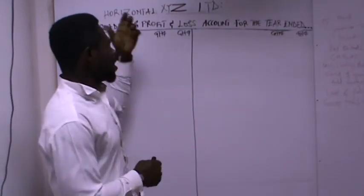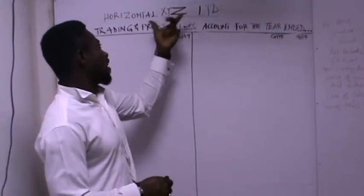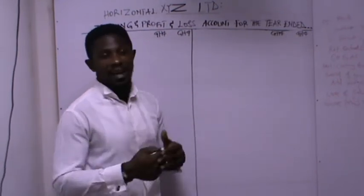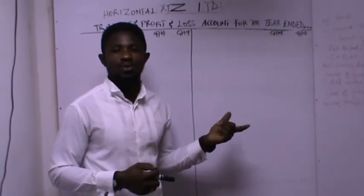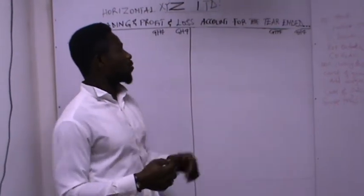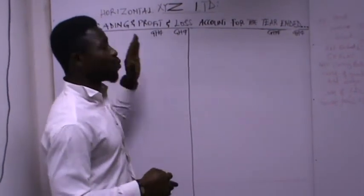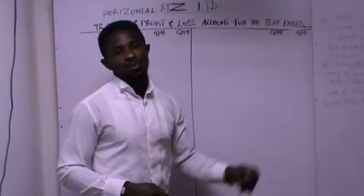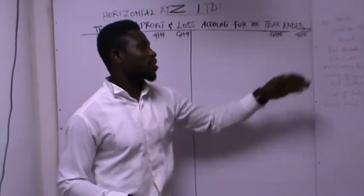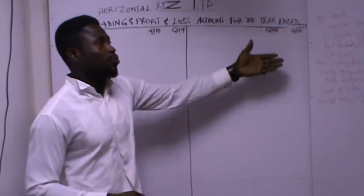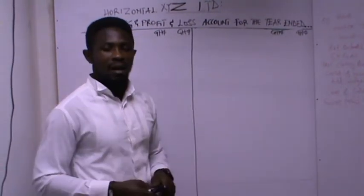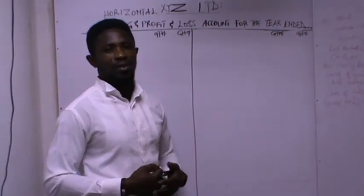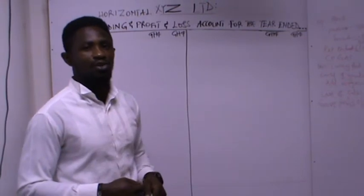For the horizontal method, it presents itself like the T-form or the T-ledger. The first thing to know is the heading. In the heading you put the name of the organization for which we are preparing the final account or income statement. Then you put the heading 'Trading and Profit and Loss Account for the year' and then you put the date — the end of the accounting period you are asked to prepare for.